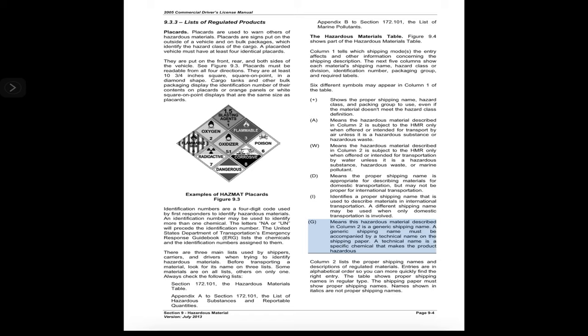Symbol 'G' means the hazardous material in column 2 is a generic shipping name. A generic shipping name must be accompanied by a technical name on the shipping paper — a technical name is a specific chemical that makes the product hazardous. Column 2 lists the proper shipping names and descriptions of regulated materials. Entries are in alphabetical order. The table shows proper shipping names in regular type; names shown in italics are not proper shipping names.